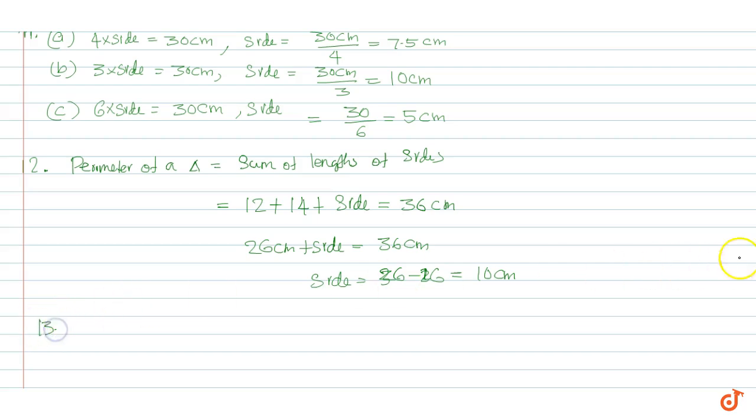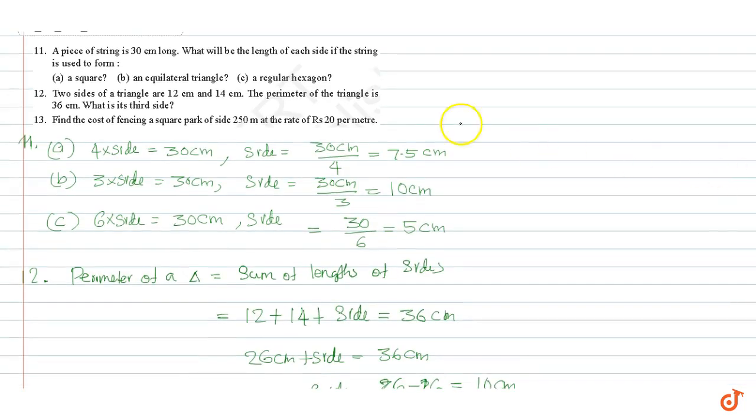Question number 13. Find the cost of fencing a square park of side 250 meters at the rate of Rs. 20 per meter.